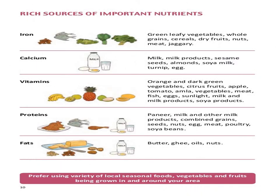Now we move on to a chart that shows various nutrients we require from our daily food and their sources. The first is iron. Iron is very important for making us healthy and for maintaining hemoglobin levels in our blood. The sources of iron are green leafy vegetables, fruits, and cereals.